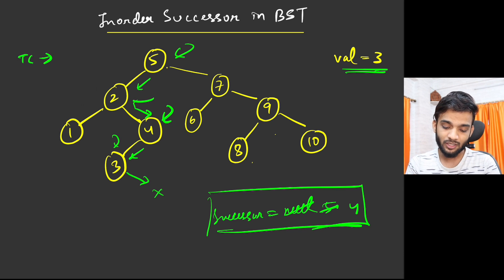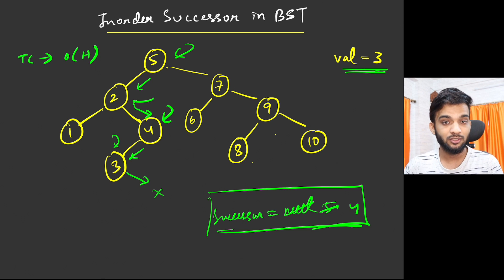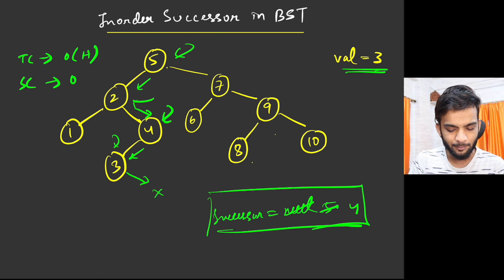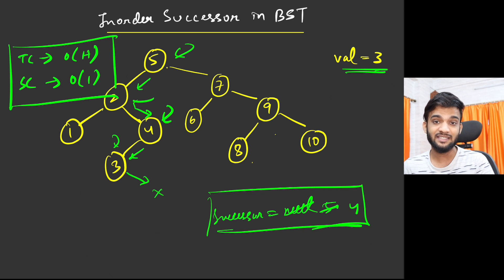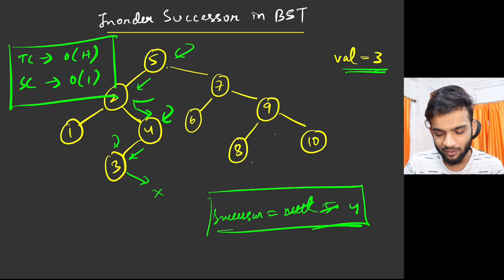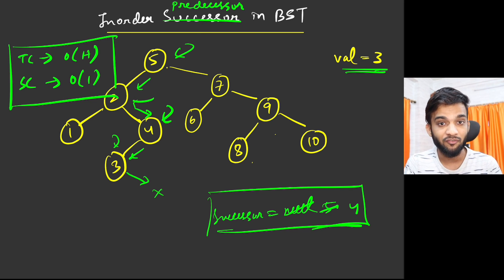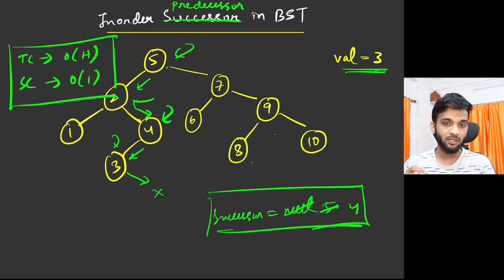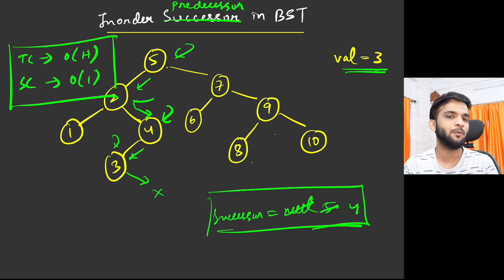The time complexity of this efficient approach is O(H) — the height of the tree — since we are moving left or right at each step. The space complexity is O(1). Now, a homework question: given a BST and a node, how do you find the in-order predecessor — the value right before the node? Drop your answer in the comments and I'll reply if it's correct.